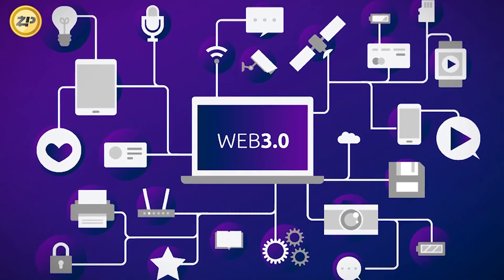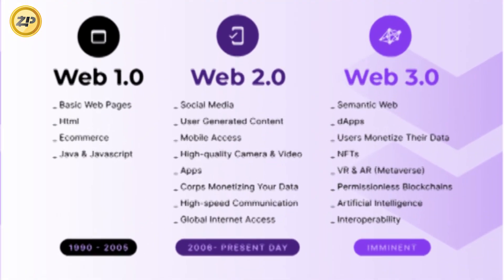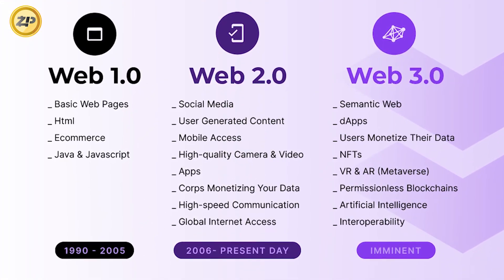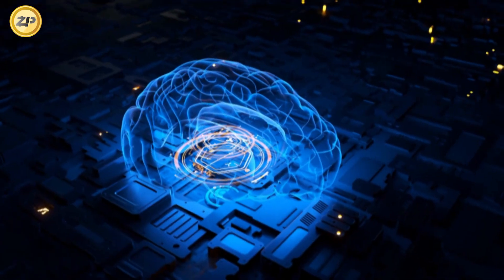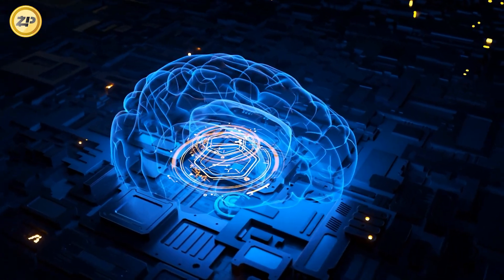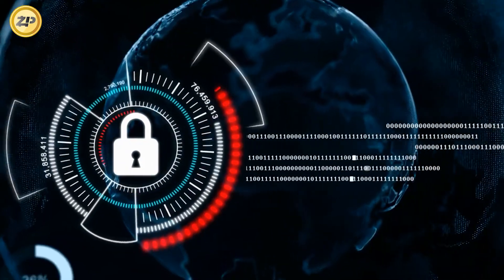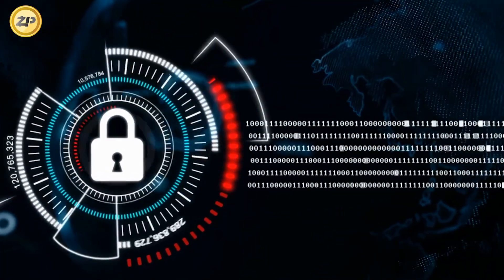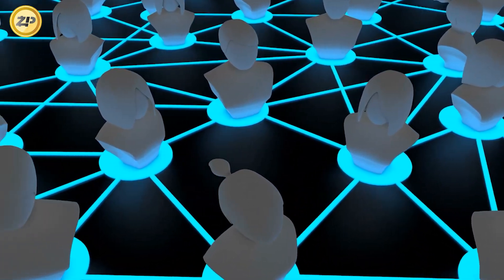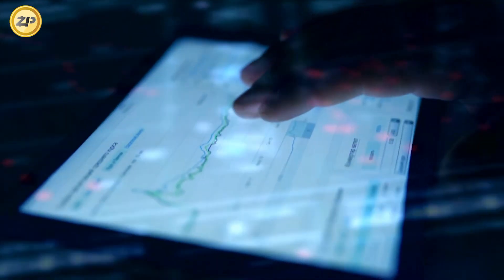Web3.0, also referred to as Web3, is the internet's third iteration, which connects data in a decentralized manner to provide a faster and more personalized user experience. It's made with artificial intelligence, machine learning, and the semantic web, and it uses the blockchain security system to keep your data safe. The defining characteristics of Web3.0 are decentralization, openness, and incredible user utility. The semantic web's main benefit is recognizing and interpreting the data's context and concept.